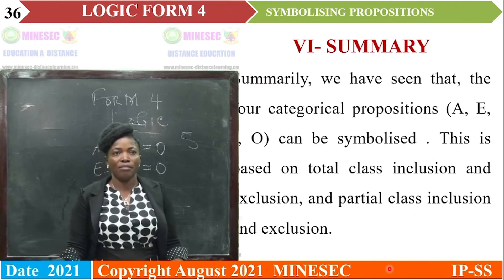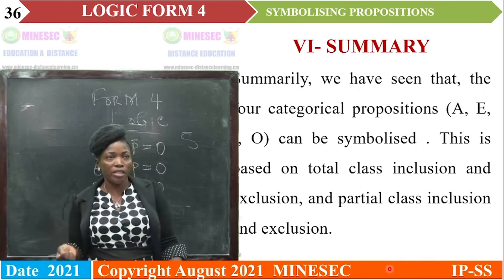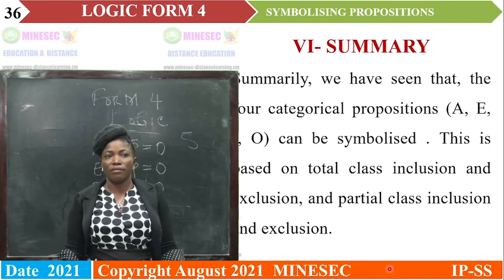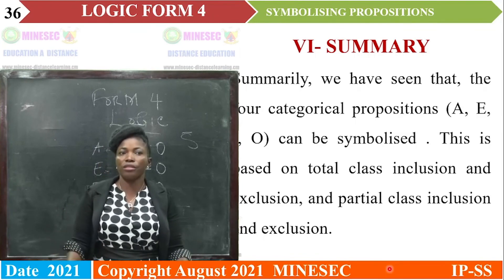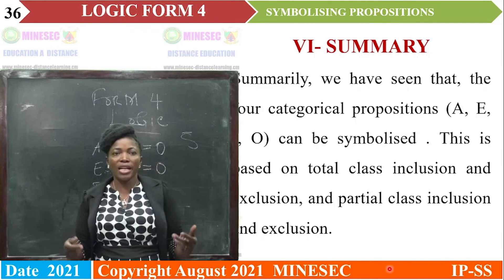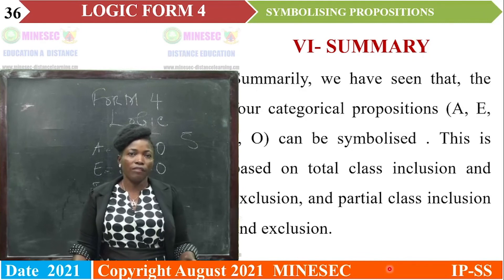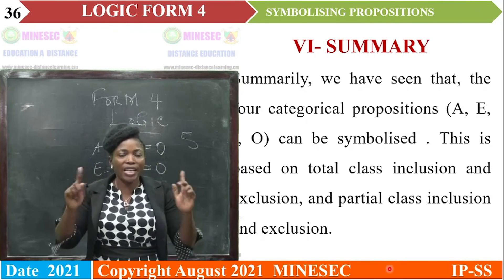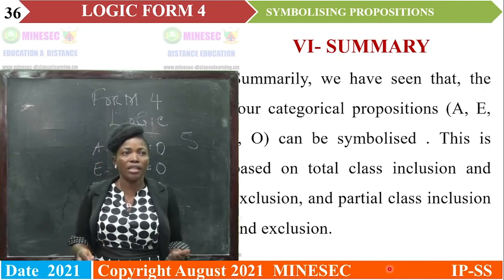Summarily, my dear learners and listeners, we have seen that the four categorical propositions — the A, E, I, and O propositions — can be symbolized. This is based on total class inclusion and exclusion, as well as partial class inclusion and exclusion.